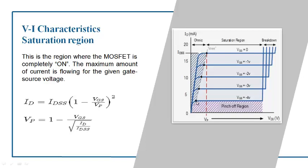Beyond the ohmic region is the saturation region. Once the current reaches a particular value, thereafter if you vary the voltage there is no variation in current — the current remains constant for that particular gate voltage. If you increase the gate voltage, the current will increase again and then land into saturation where further increase in VDS will not cause variation in current. This is the region where the MOSFET is completely ON, and there is no condition for current to increase beyond that particular value for a given gate-to-source voltage.